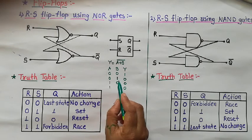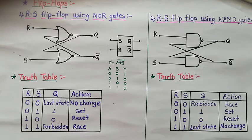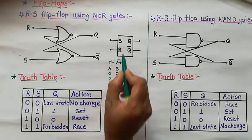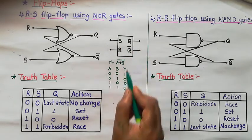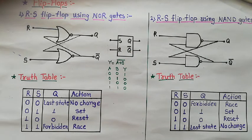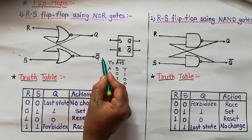This NOR gate is used for the construction of RS flip-flop. This logic diagram shows the RS flip-flop. The R and S inputs give us the flip-flop set or reset. This is the symbol of RS flip-flop with two inputs S and R, and two outputs Q and Q bar. Q and Q bar are always complementary: if Q equals 1 then Q bar equals 0, and if Q equals 0 then Q bar equals 1.